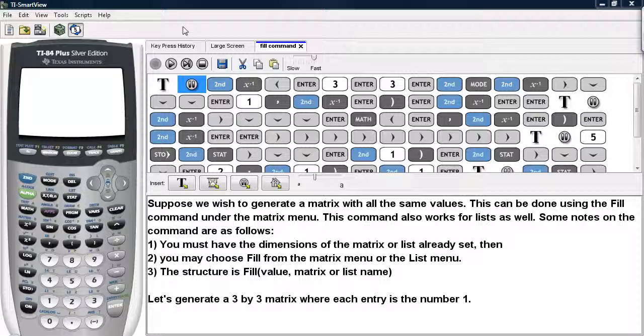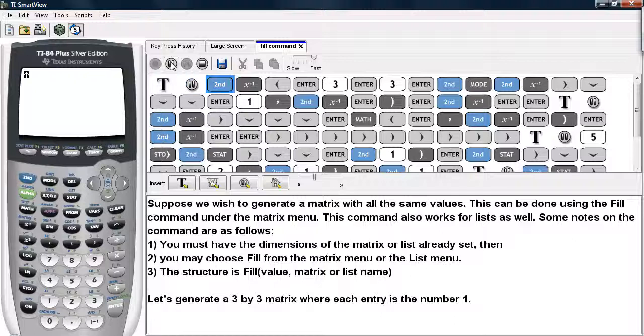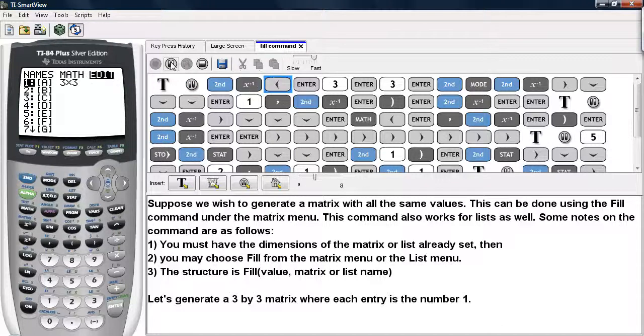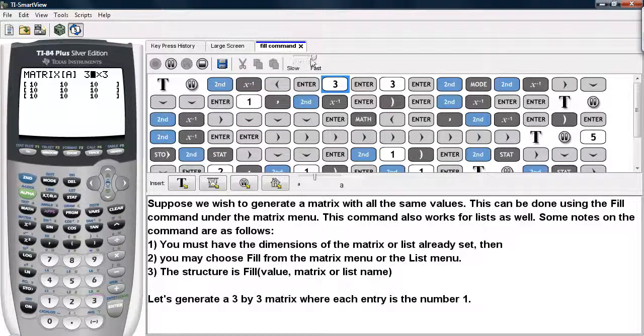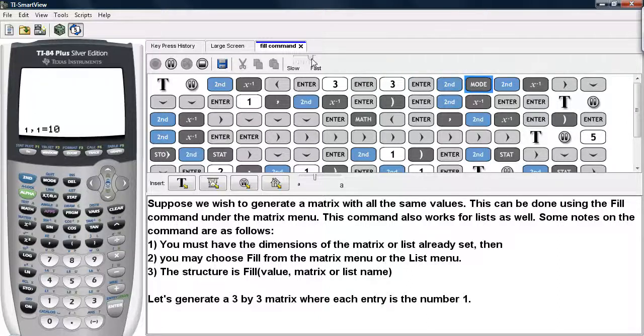Let's do an example by generating a 3 by 3 matrix where each entry is the number 1. We go under matrix, go over to edit, type in the dimensions of our matrix, and we go ahead back to the home screen.